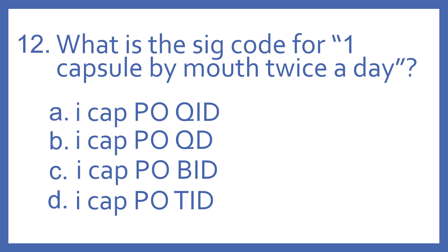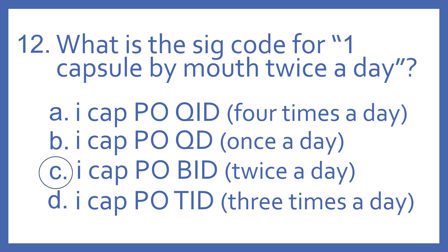Number 12, what is the SIG code for one capsule by mouth twice a day? A is ICAP POQID. B, ICAP POQD. C, ICAP POBID. Or D, ICAP POTID. And the answer is C. One capsule by mouth twice a day would be ICAP POBID. BID is twice a day. QID is four times a day. QD is once a day. And TID is three times a day.